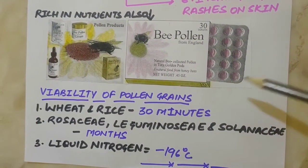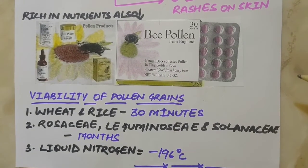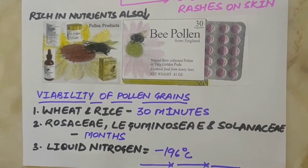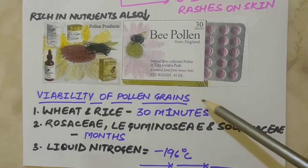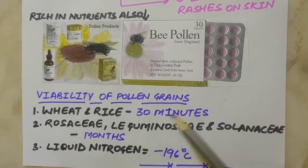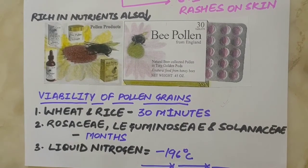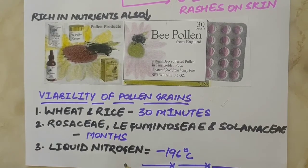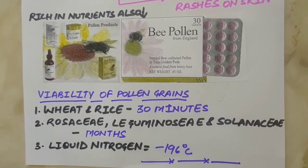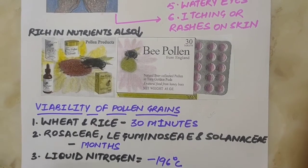Regarding the viability of pollen grains: once they are shed, pollen grains have to land on the stigma before they lose viability so that fertilization can occur. The period for which pollen grains remain viable is highly variable and depends on temperature and humidity. In some cereals such as rice and wheat, pollen grains lose viability within 30 minutes of their release. In Rosaceae, Leguminosae and Solanaceae, they remain viable for months. To keep pollen grains viable for years, we can store them using liquid nitrogen at minus 196 degrees Celsius. These pollen can be used in pollen banks, similar to seed banks, which are used in crop breeding programs.